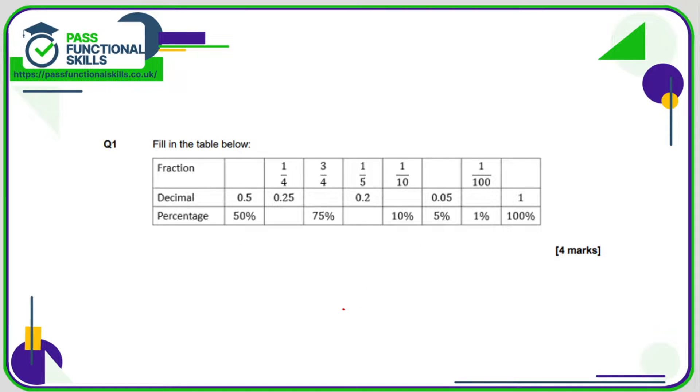So question one we need to fill in the table below. Hopefully we know that 50% is one half. A lot of these are quite easy as long as you understand what the calculations are. For example, to go from decimals to percentages you're multiplying by 100, and to go from percentages to decimals you're dividing by 100. So 0.25 multiplied by 100 is 25%. 0.2 multiplied by 100 is 20% and that's that row completely filled in.